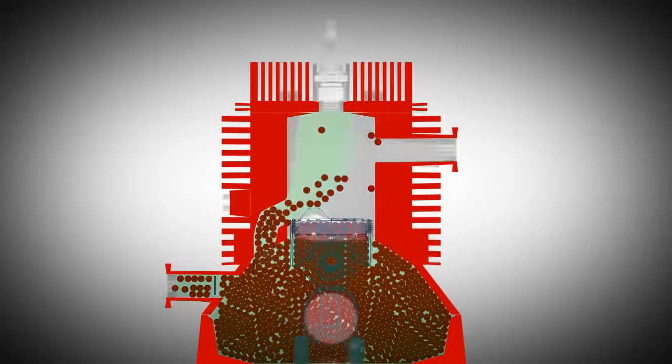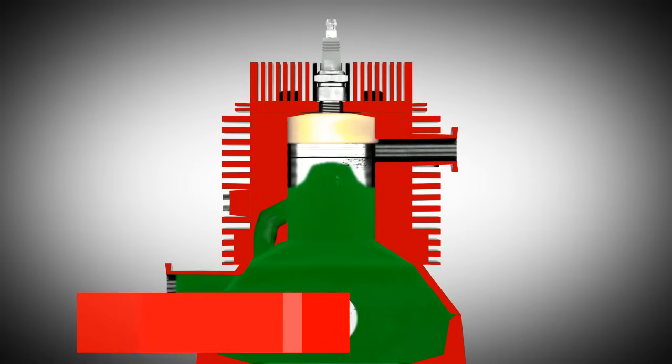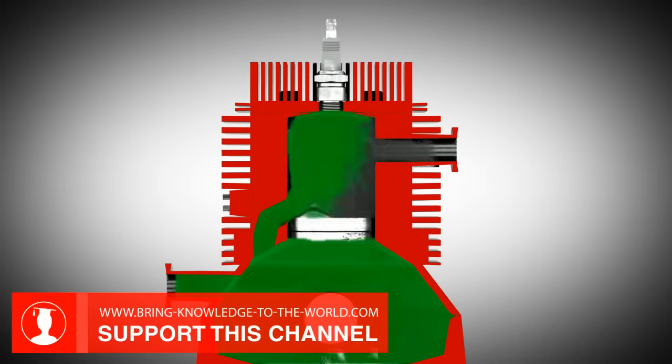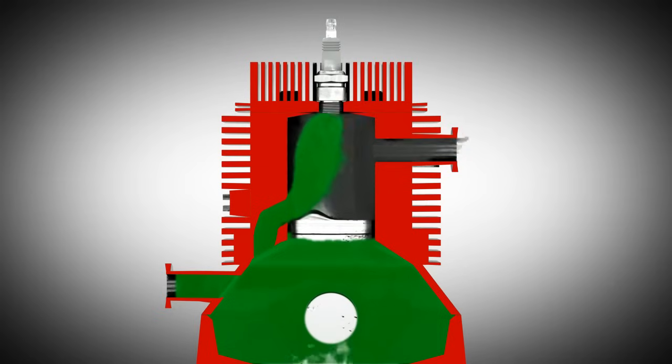The engine shown here operates according to the principle of cross-flow scavenging. Intake and exhaust port are on opposite sides. The deflector piston is formed in such a way that the incoming fresh mixture can successfully push out the exhaust fumes.